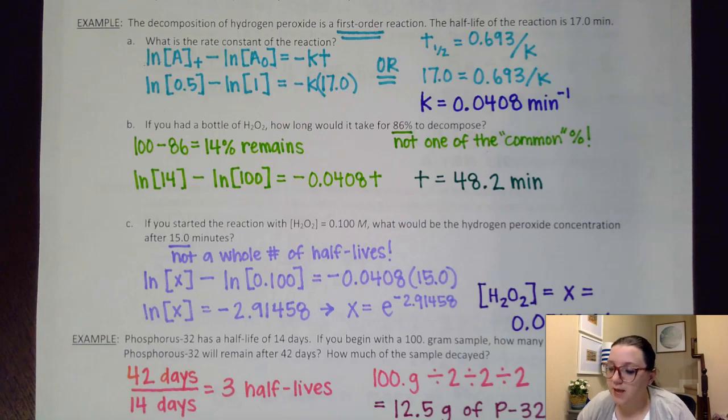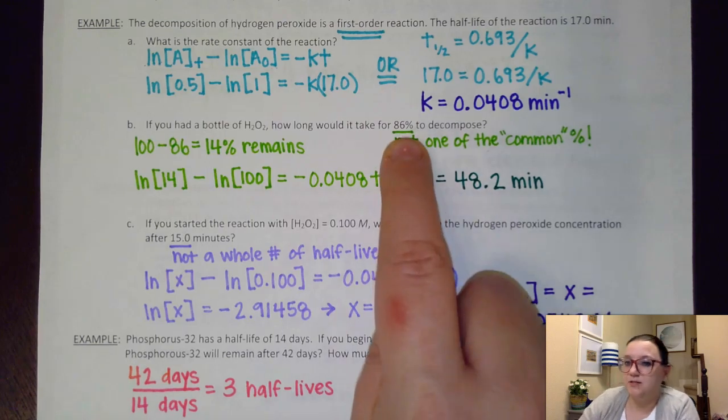So then on the next question, if you had a bottle of this hydrogen peroxide, how long would it take for 86% of it to decompose? 86% is not quite one of those common percentages that we see with half-lives. We see us going from 50% down to 25%, which would be 75% remaining. Then that 25% would get cut to 12.5, and so that'd be 87.5% remaining.